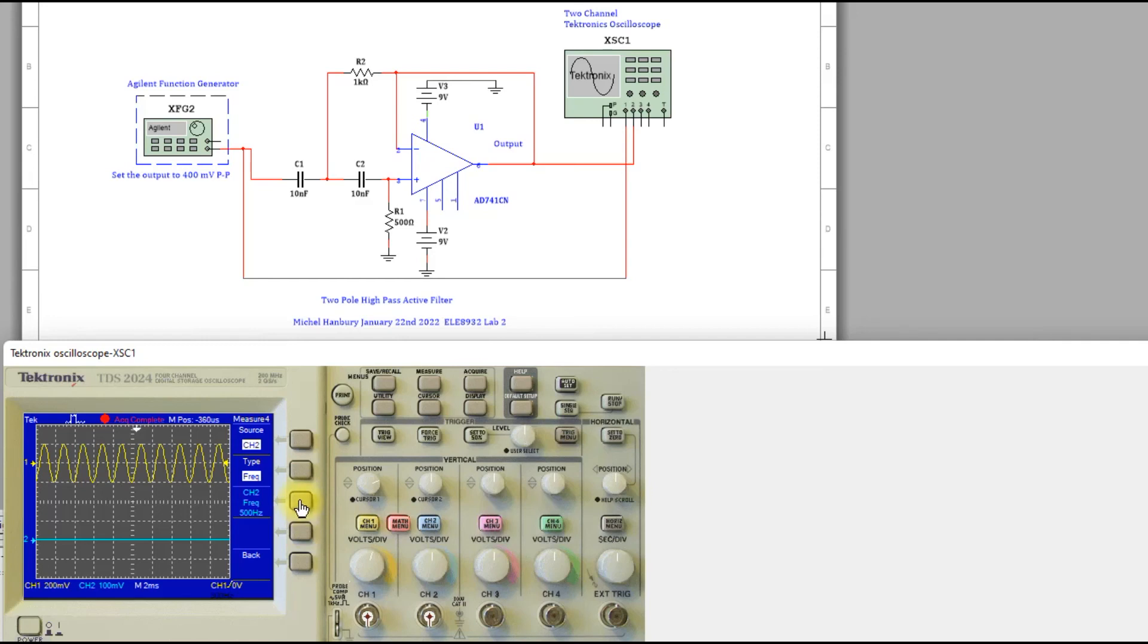You've got frequency, period, mean value, peak to peak value, and cycles RMS of the signal. Once you've got that all set up just click on measure again and you get all the measurements on the screen.